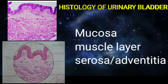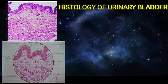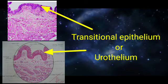Histologically there are three layers for the urinary bladder: mucosa, muscle layer, and serosa or adventicia. The mucosa is made up of transitional epithelium, the features of which we have learned earlier.